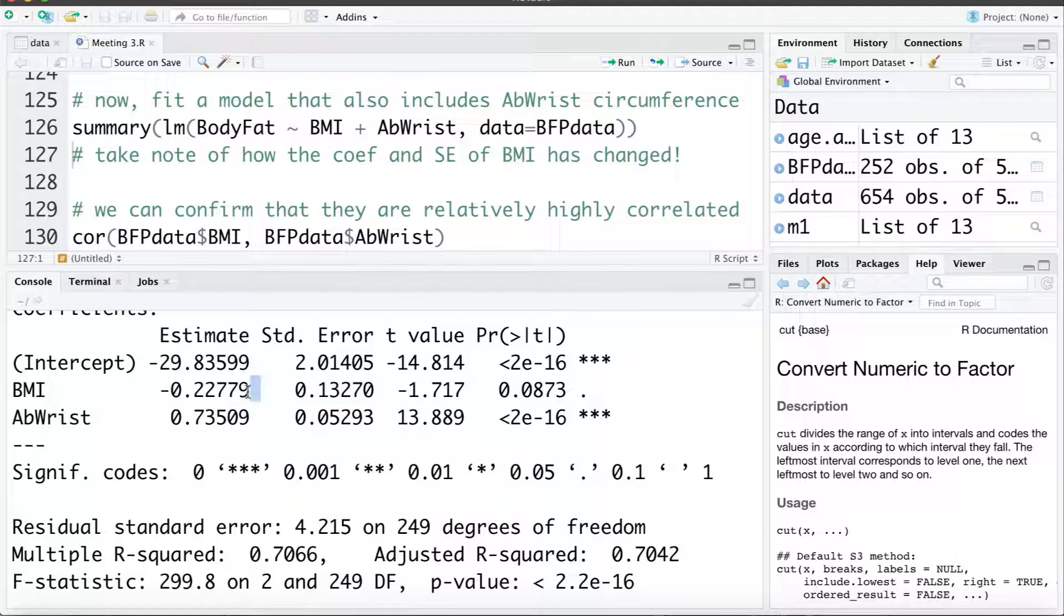One other thing worth noting is what happens to this BMI coefficient. BMI coefficient has changed. It's actually now become negative. So what's the interpretation of this coefficient? When BMI increases by one unit, body fat percentage decreases by 0.22. Now that's clearly a biased estimate. As BMI goes up, body fat percentage should not be going down. As the body gets larger in size, it shouldn't be having less fat on it.